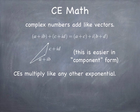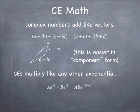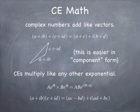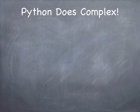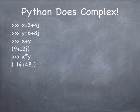Multiplying is a different story. Complex exponentials multiply like any other complex number: the magnitudes multiply, but the phase angles add because they show up in the exponent. If you multiply complex numbers expressed in component form, it gets kind of ugly — it's not as easy to do. But the good news is Python doesn't care; it does complex math directly. If you define x to be 3+4j and y to be 6+8j, and you add x and y together, it does the right thing: it gives you 9+12j.